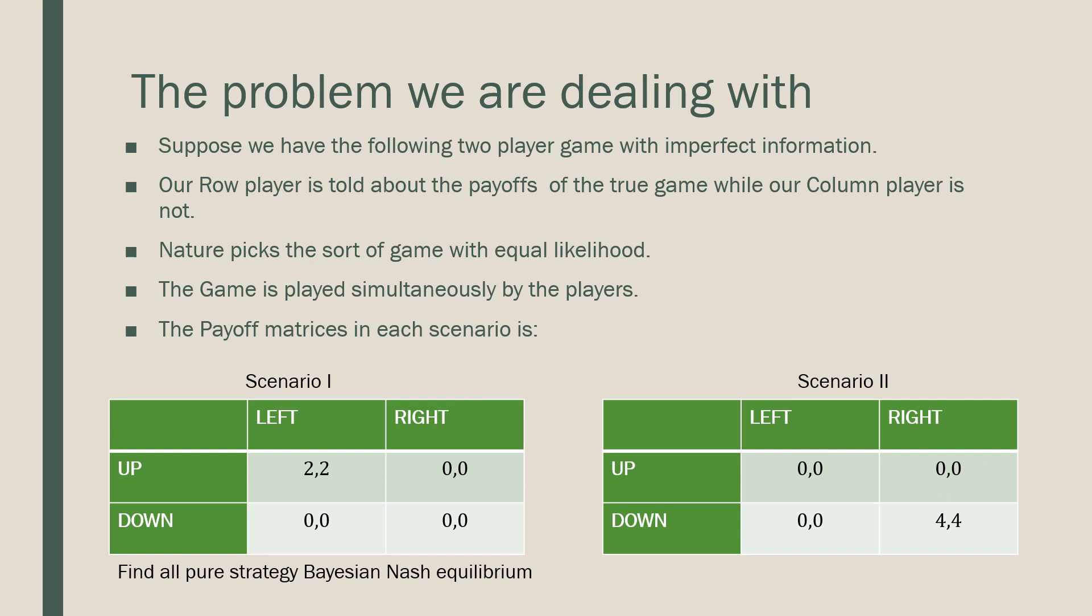The payoff matrix in each scenario is going to be the following in each of these cases. The rest of the matrix being zeros in scenario one except for up and left being 2-2, and for scenario two we're going to have our entire matrix being zeros except for the down right part which is going to be 4-4. What we're tasked to do is to find all pure strategy Bayesian Nash equilibrium.